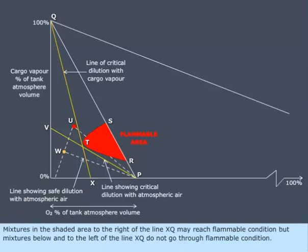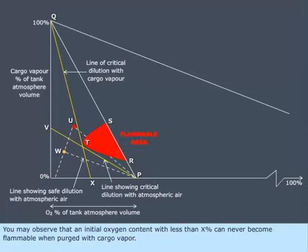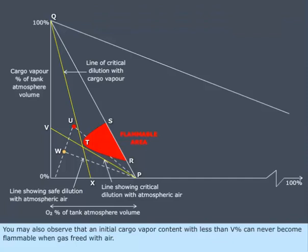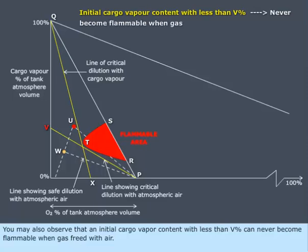Mixtures in the shaded area to the right of the line XQ may reach flammable condition, but mixtures below and to the left of the line XQ do not go through flammable condition. An initial oxygen content with less than X percent can never become flammable when purged with cargo vapor. An initial cargo vapor content with less than V percent can never become flammable when gas freed with air.